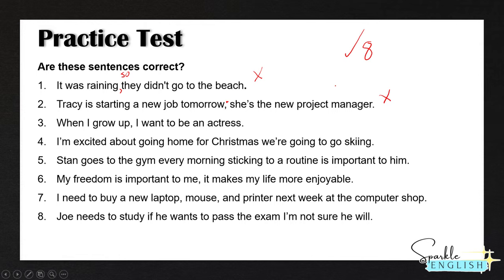Number three is correct. You might think this is a comma splice because we have a comma, but it's not. 'I want to be an actress' is an independent clause, while 'when I grow up' is a dependent clause — it doesn't make sense on its own. After a sentence starts with a dependent clause, we use a comma before the independent clause, so this is correct as it is. Number four is incorrect: 'I'm excited about going home for Christmas. We're going to go skiing.' We separate it into two sentences with a period and capitalize 'We're.'